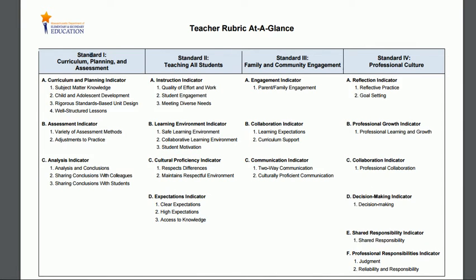The rubric is organized with the following hierarchy. There are four Standards of Effective Practice: Curriculum Planning and Assessment, Teaching All Students, Family and Community Engagement, and Professional Culture. Each standard is then broken out into several indicators. In total there are 16 indicators across the four standards. These indicators are then divided into even smaller aspects of practice called elements. The rubric includes a total of 33 elements, and it is at this most granular level that the rubric includes descriptions of practice.